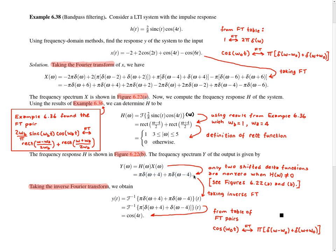In this example, we're trying to find y. Since we now have a formula for Y, we can find y by taking the inverse Fourier transform. Taking the inverse Fourier transform of our formula for Y trivially gives us this first line. To simplify this inverse Fourier transform, we use a Fourier transform pair — specifically, a pair of terms involving two shifted delta functions, which is essentially the form we have here. Using this pair, we simplify the inverse Fourier transform to cos(4t). So we've now found the function y.